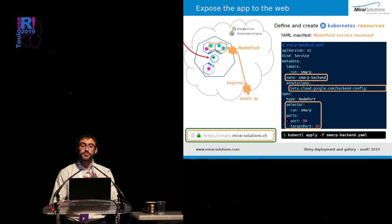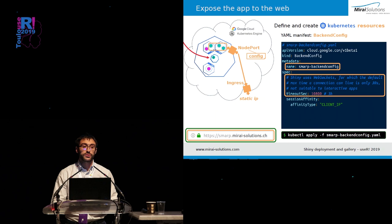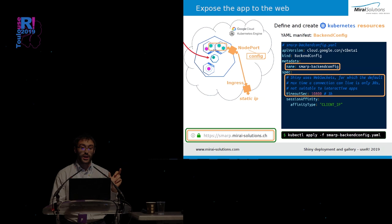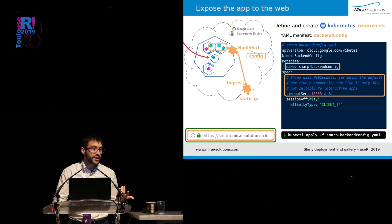You also see in the middle something called backend config, which is quite tricky. We need to associate another small resource to this node port backend — a configuration. Why do we need this? The tricky thing about Shiny apps is that they are based on web sockets, and web sockets on HTTP have, by default, a very short connection timeout. If you wouldn't increase the timeout to, for example, three hours — which is more reasonable for an interactive app — your users would reach the app and after 30 seconds the app grays out and they have to reload the page, which is not a very nice user experience.